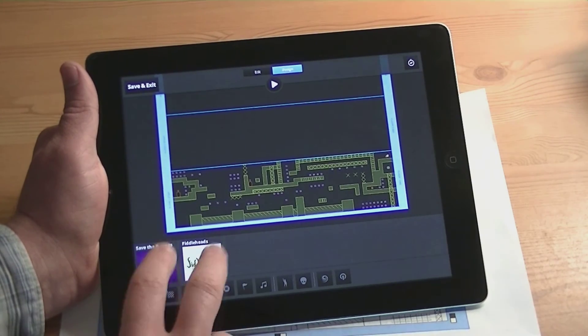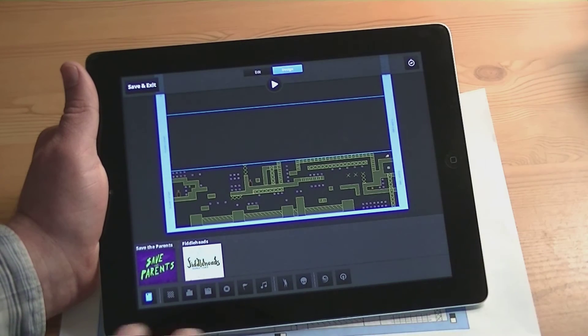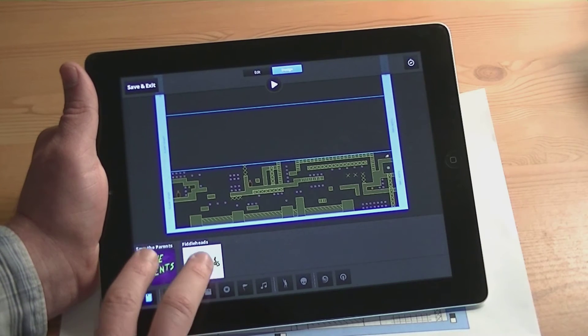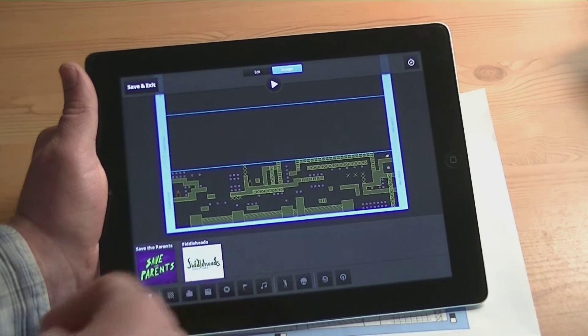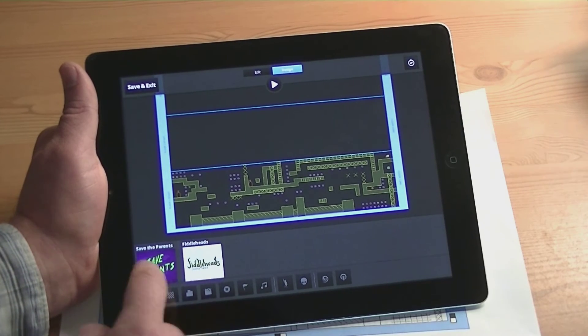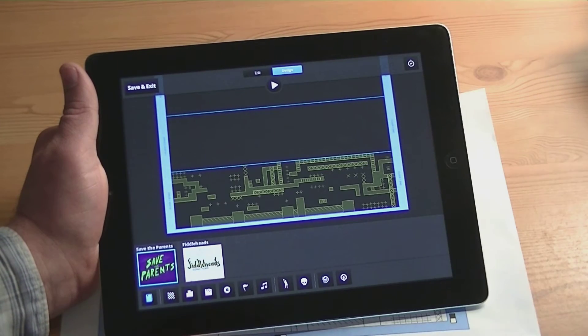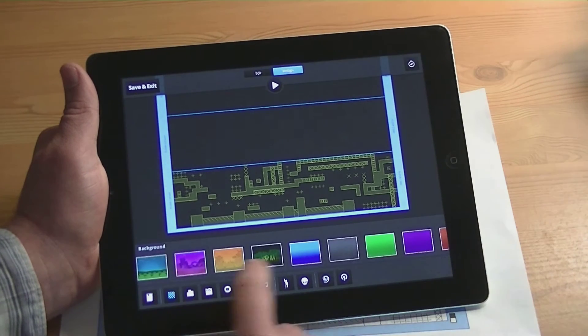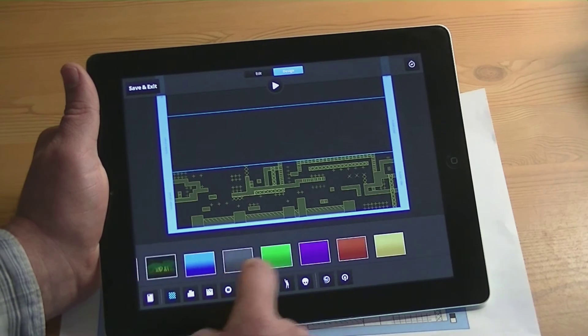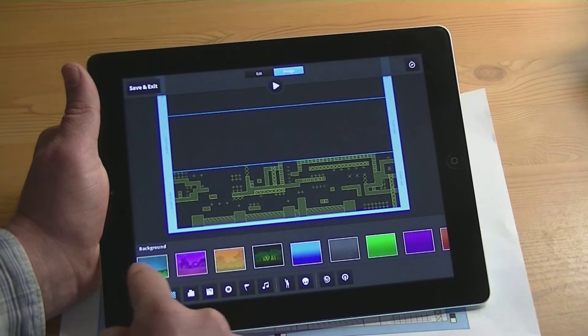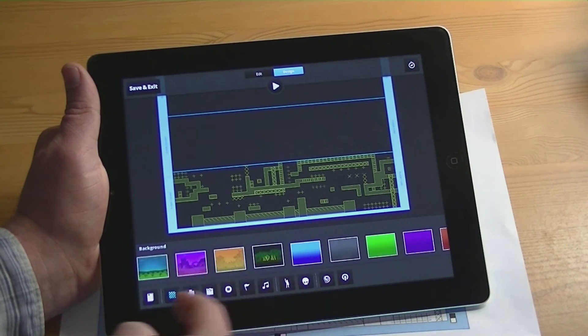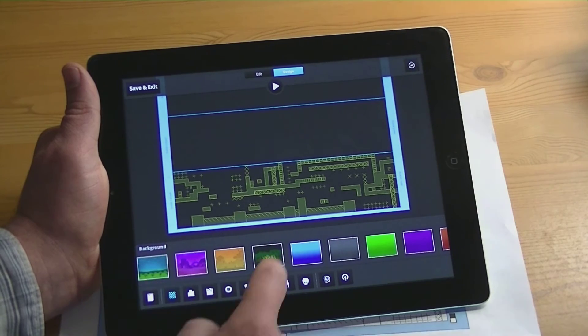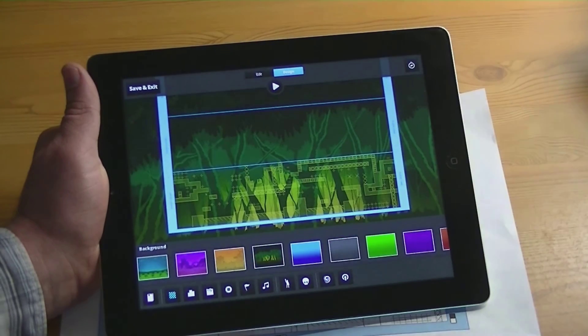So the first part you have is a couple stories, they're going to be adding more to this. Two different stories right now, what they are is basically the theme of the game. So I'm just going to do the Save the Parents one and try that out. Then you're given various things, so the first one is your background. You can choose all sorts of different types of backgrounds. I like the forest one, kind of a dark forest-y look.